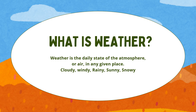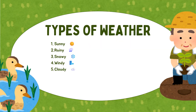It can be cloudy, windy, rainy, sunny, or snowy. Let's see the different types of weather. So we have sunny, rainy, snowy, windy, and cloudy.